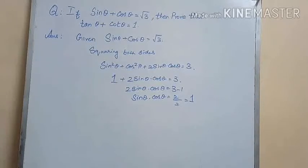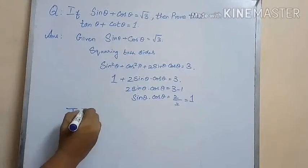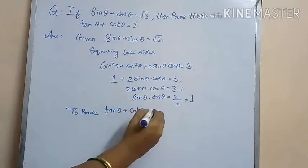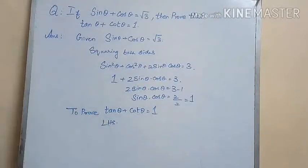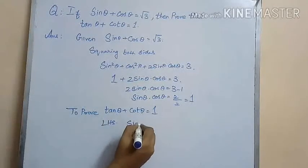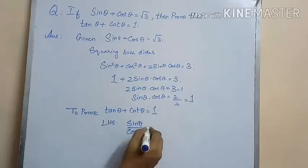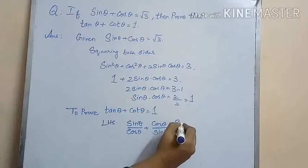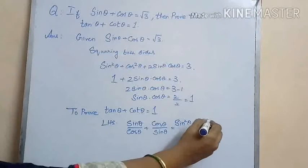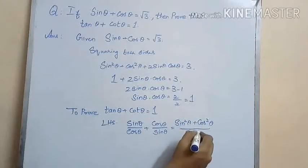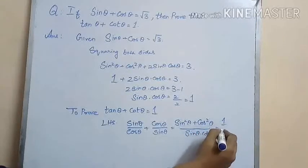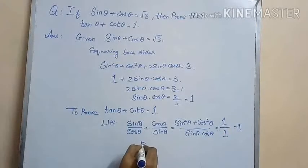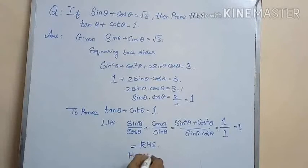For the given condition, sin θ cos θ = 1. Now we have to prove that tan θ + cot θ = 1. Let us consider the LHS: tan θ + cot θ = sin θ/cos θ + cos θ/sin θ. Taking LCM, we get (sin²θ + cos²θ) / (sin θ cos θ). The numerator becomes 1 and the denominator is also 1, so we get 1, which equals RHS. Hence we have proved.